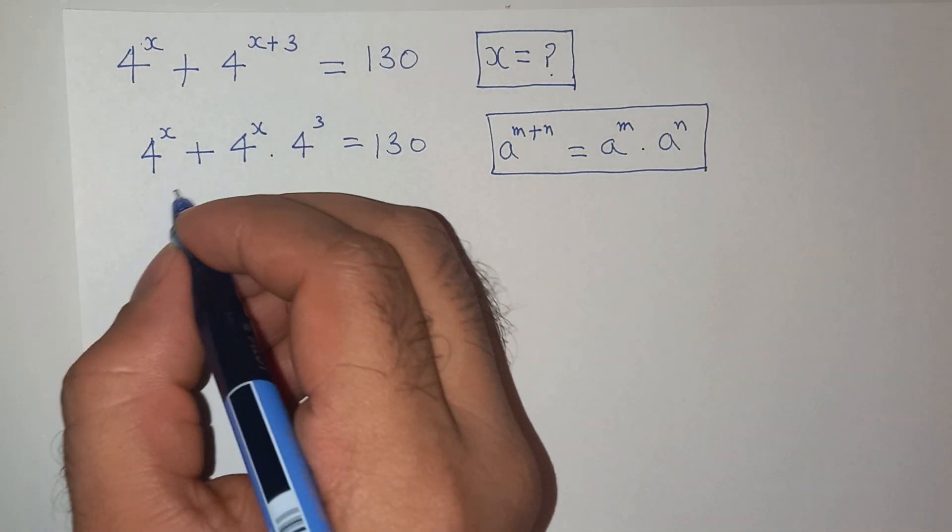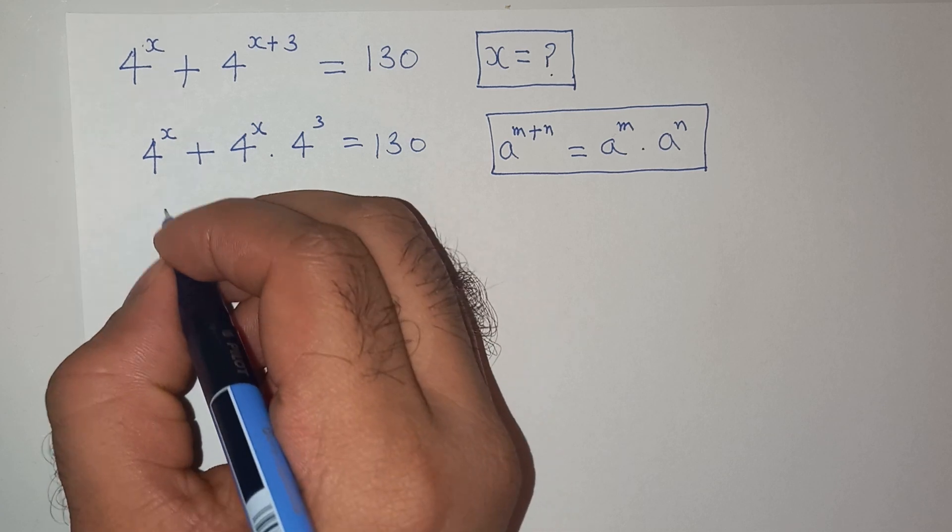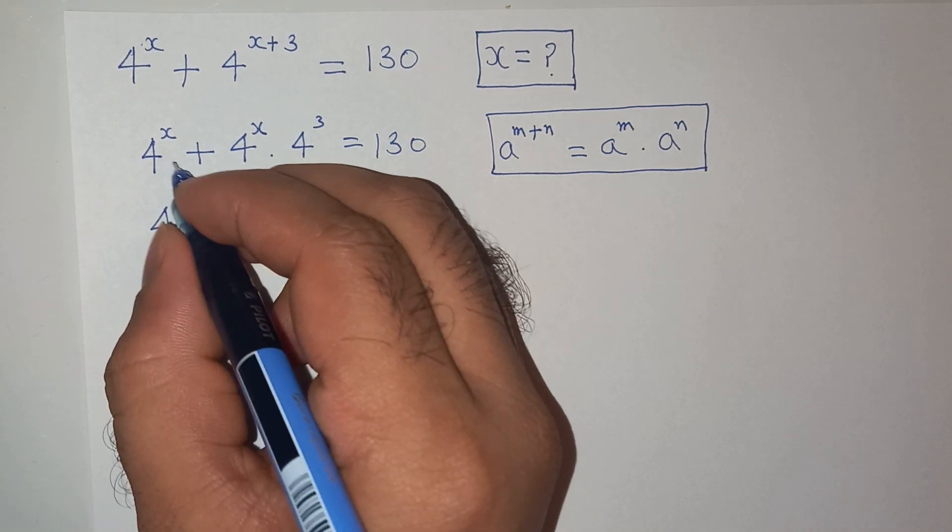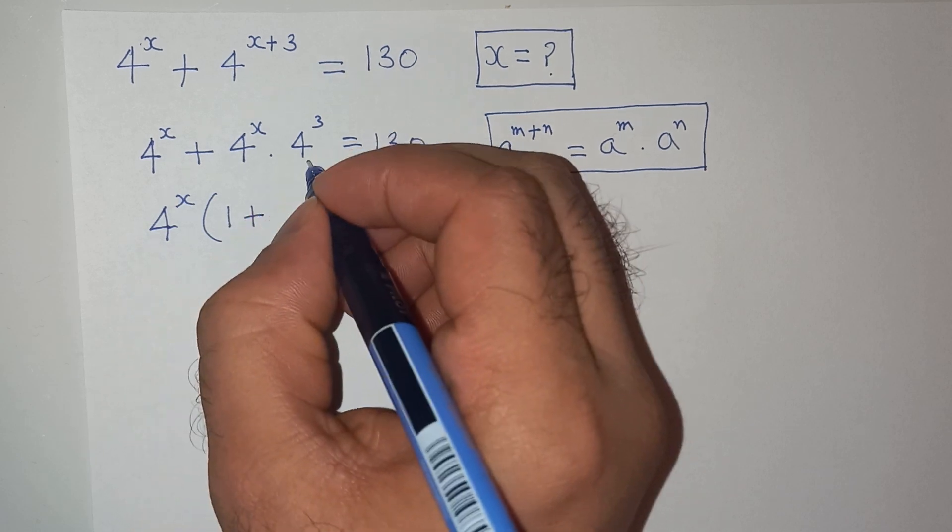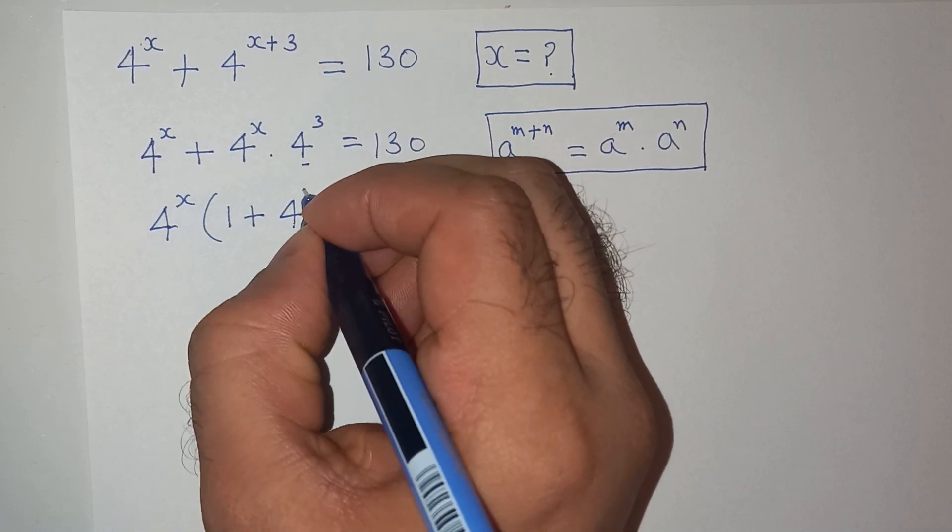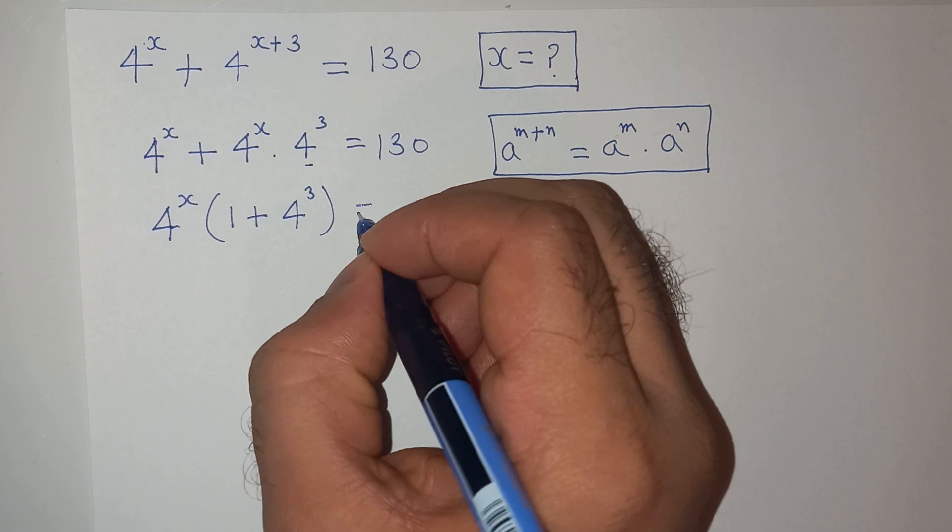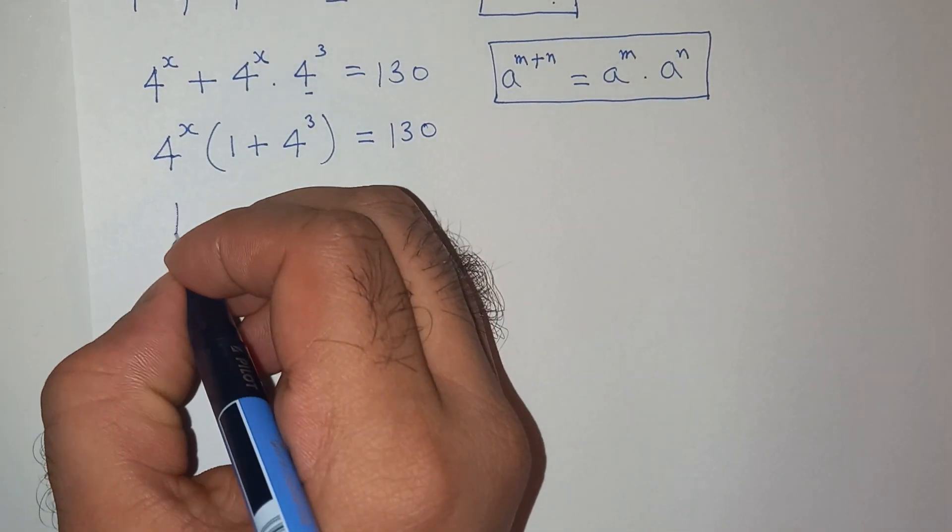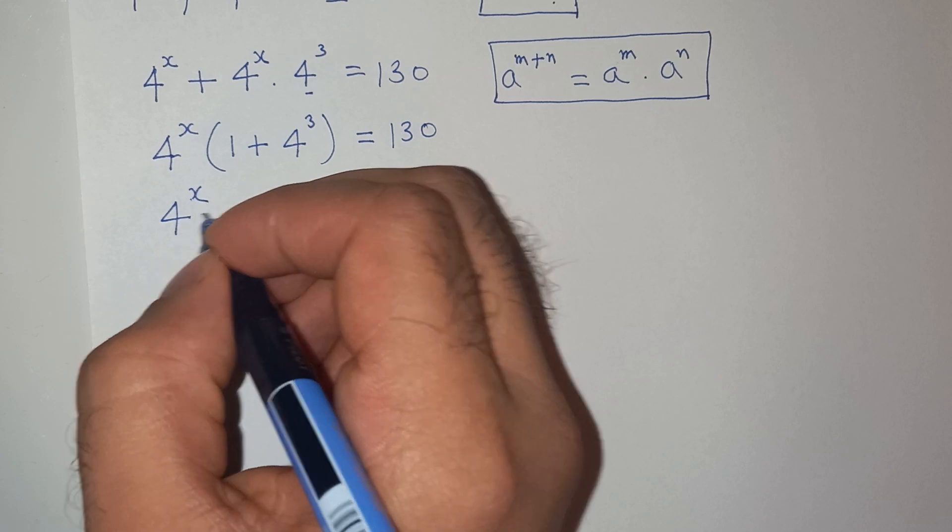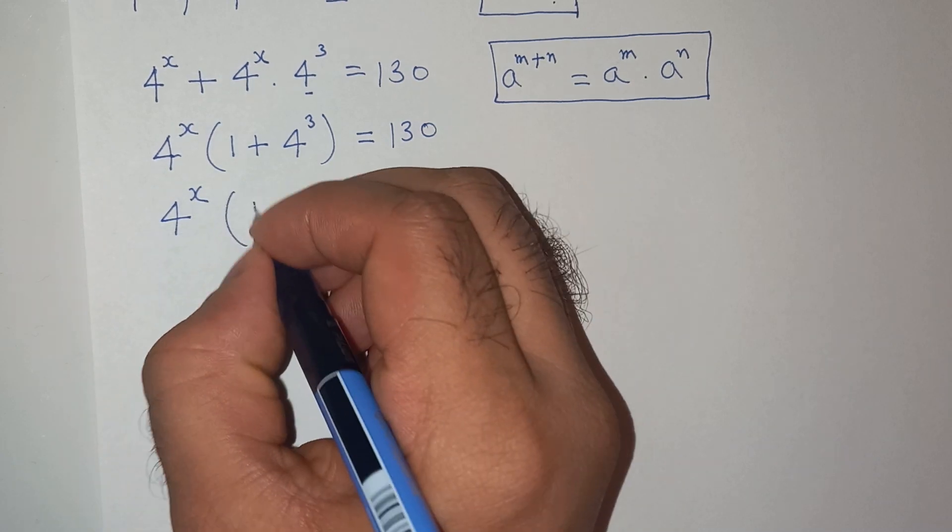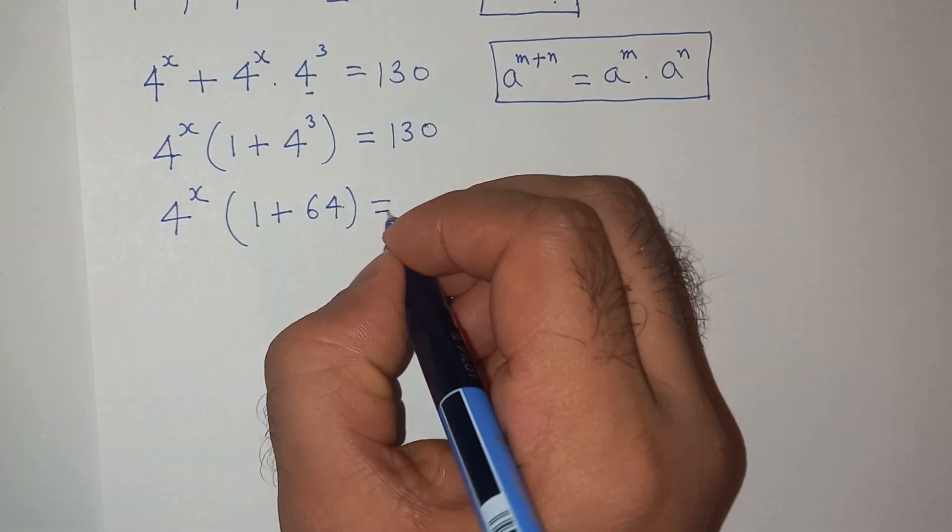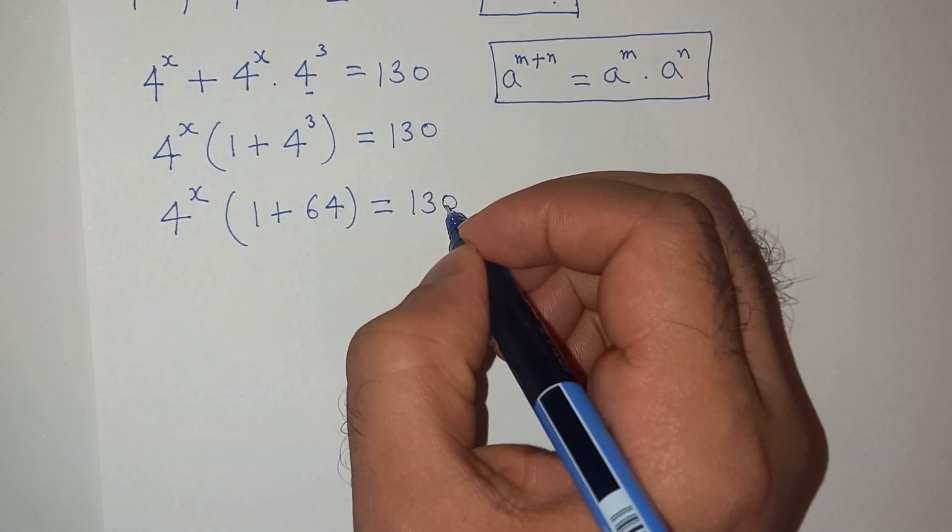4 power x is common in both the terms so we can take it out. This will be 1 plus 4 cube equals to 130. So, this will be 4 power x bracket 1 plus 4 cube is 64 equals to 130.